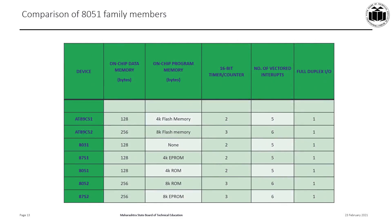Let us compare the 8051 family members. The AT89C51 has 128 bytes of on-chip data memory, whereas AT89C52 has doubled that to 256 bytes. The 8031 has the same 128 bytes as the 8051. The 8751 also has 128 bytes, and the 8051 has 128 bytes. The 8052, like the 89C52, has 256 bytes — double the on-chip data memory. Even the 8752 has 256 bytes of on-chip data memory, double that of the 8751.